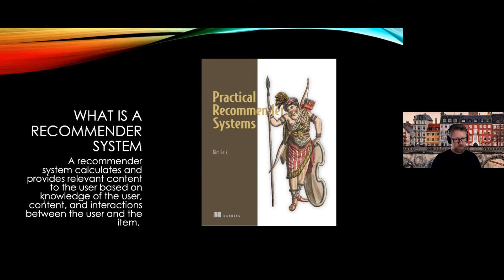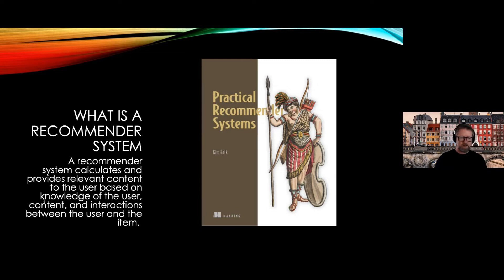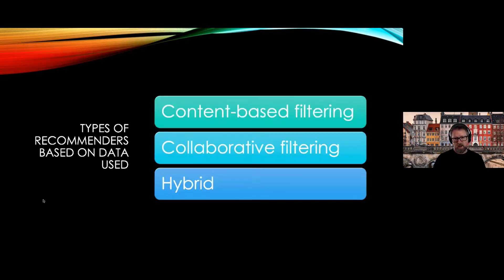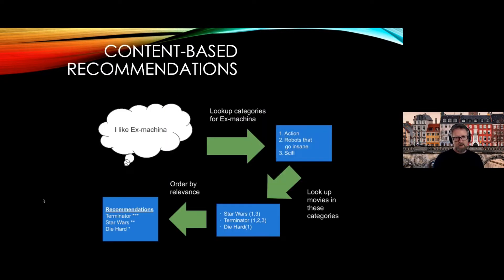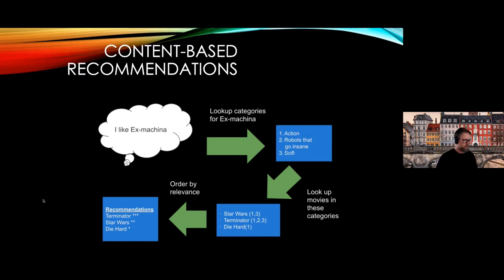Basically everybody knows what a recommender system is. It calculates and provides relevant content based on the user, the content, or the interactions in between. You can divide recommenders into three types based on what data they use: content-based, collaborative filtering, or hybrid. I think people know the basic concept from the earlier talk.